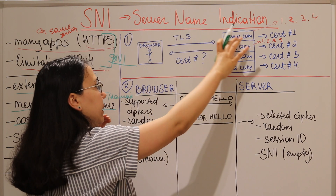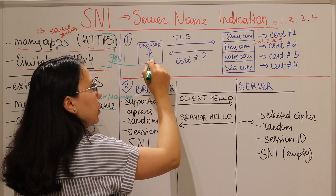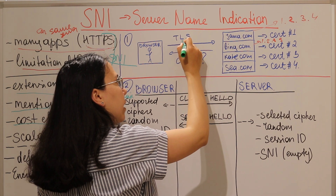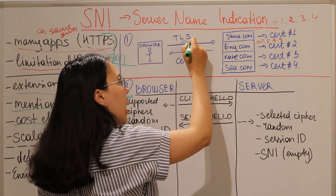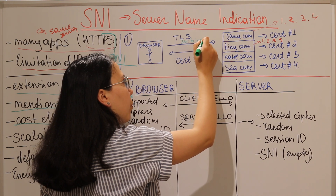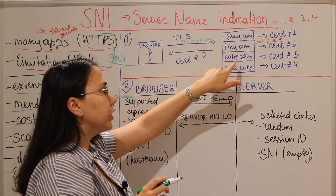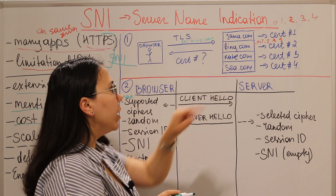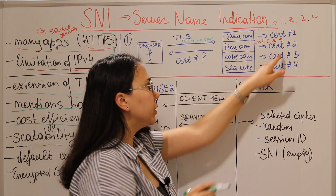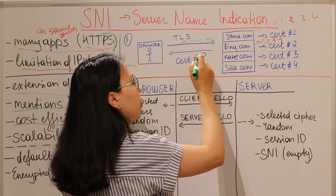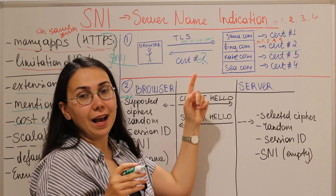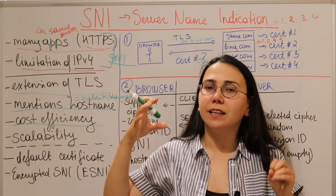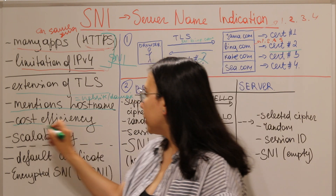At a high level, here's how it works: as a browser establishing a TLS handshake, I include an SNI field with the domain I want to access — for example, bing.com. The server reads the SNI field and knows which certificate to serve. It looks up bing.com, selects certificate number two, and serves it. That's how SNI solves the problem — the server now knows which certificate to provide during the TLS handshake.